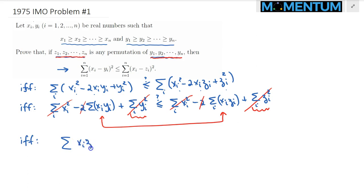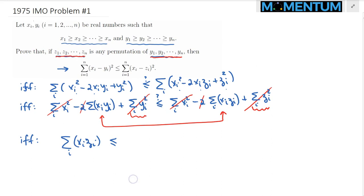We need to prove that the following sum product is less than or equal to the sum product, i equals from 1 to n of x sub i times y sub i. But I claim that this is obvious, which is true.